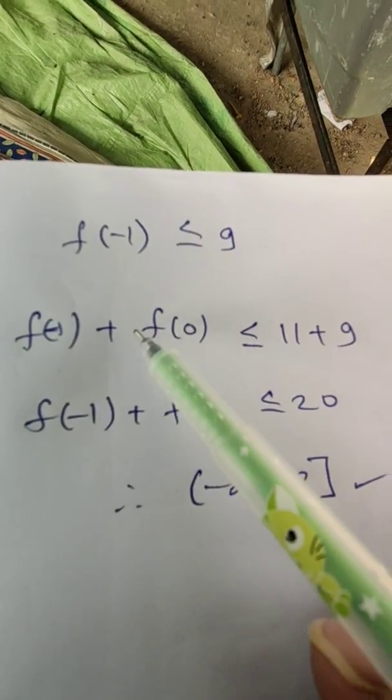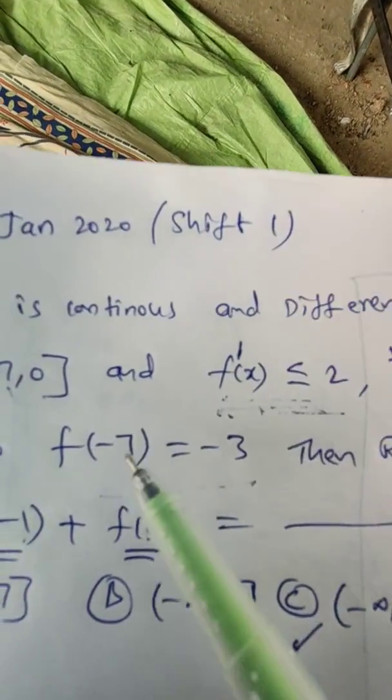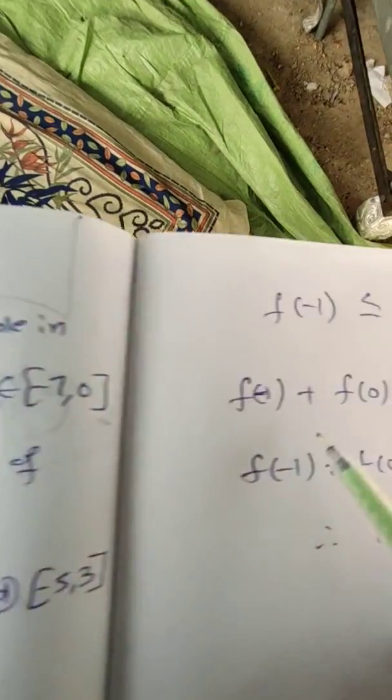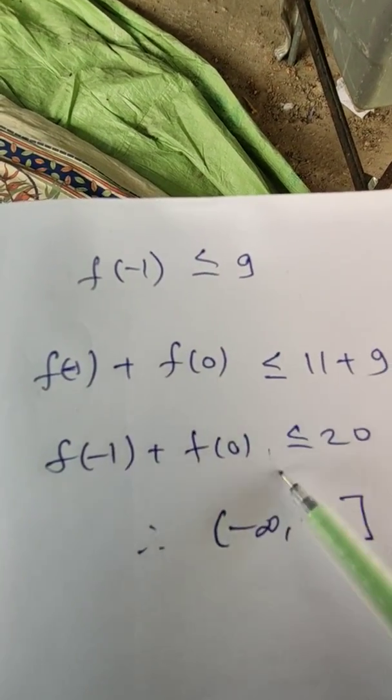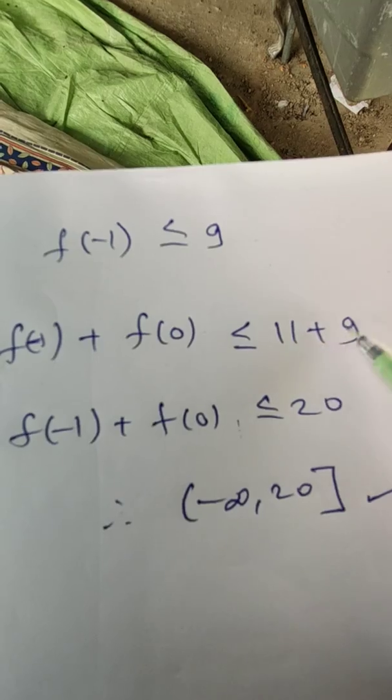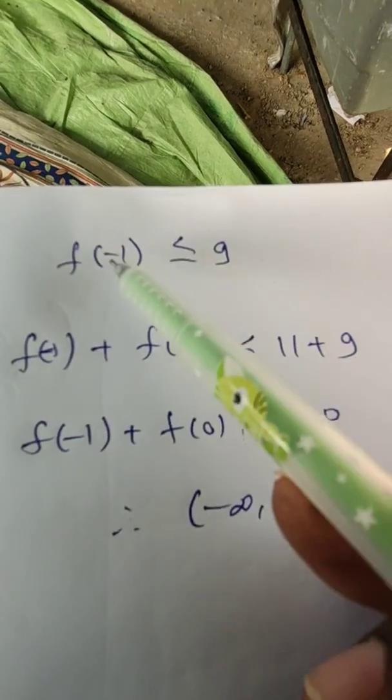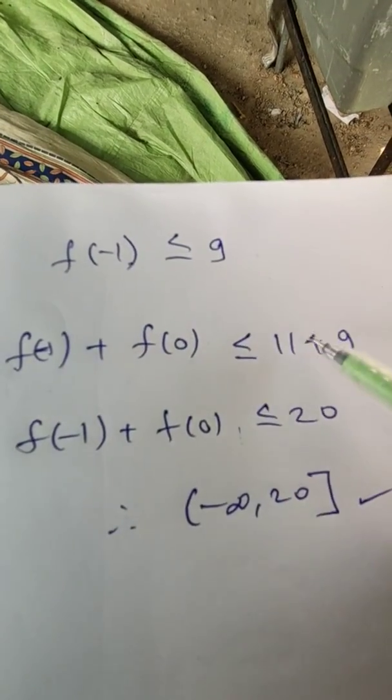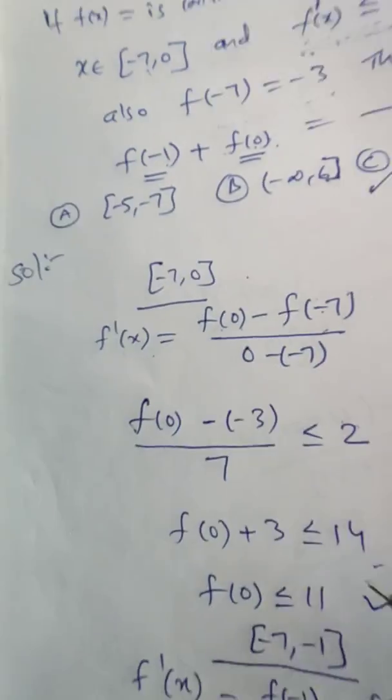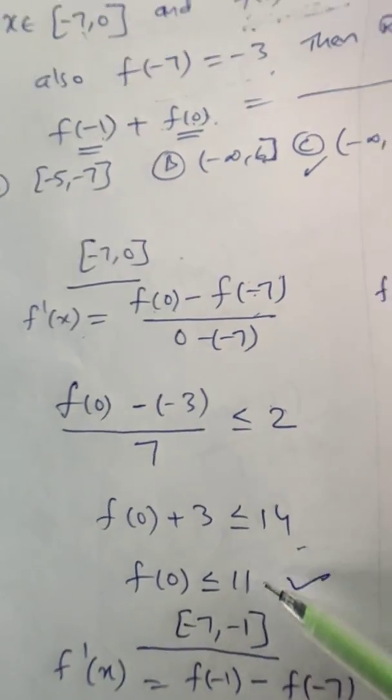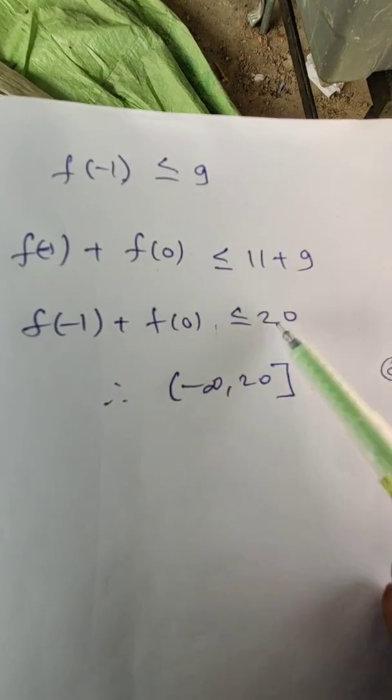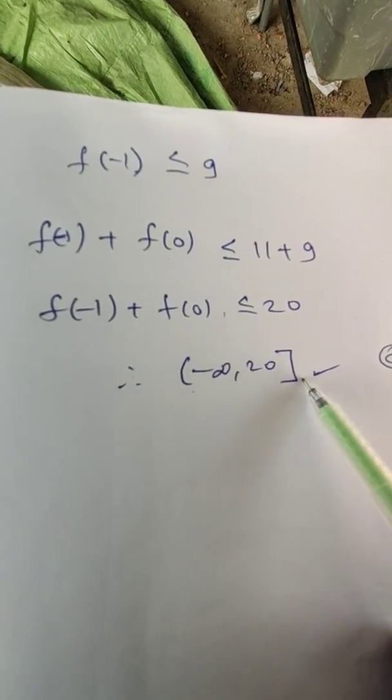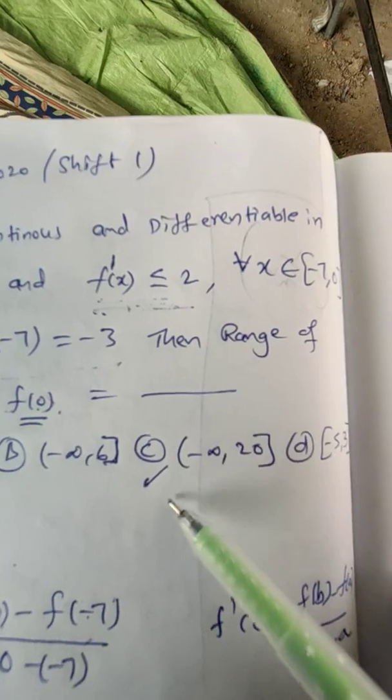So here what he asked to find is f(-1) + f(0). f(-1) value is how much and f(0) is how much? f(0) is 11, f(-1) is 9. So we are substituting here 11 + 9 = 20. So this value is less than or equal to 20, that is from negative infinity to 20. So option C is the right answer.